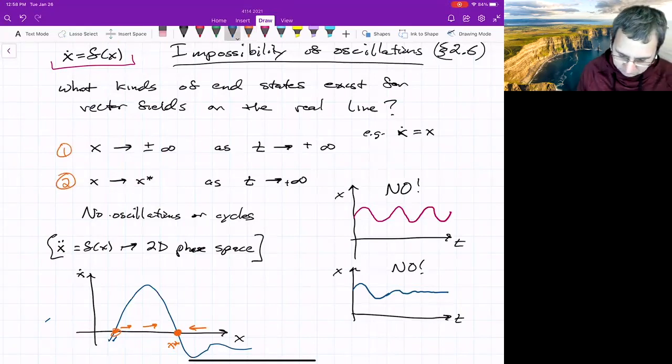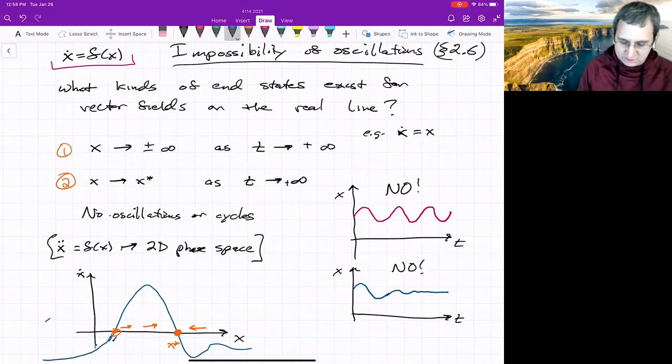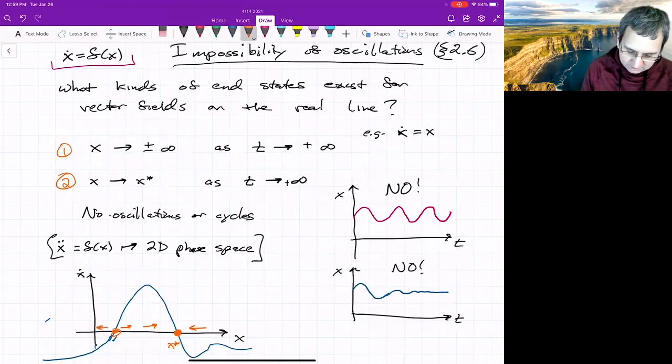All right, so what's an example of going to minus infinity? Well, this thing, if this curve never actually intersects the x-axis again, then you'll just sort of keep on going towards negative infinity.